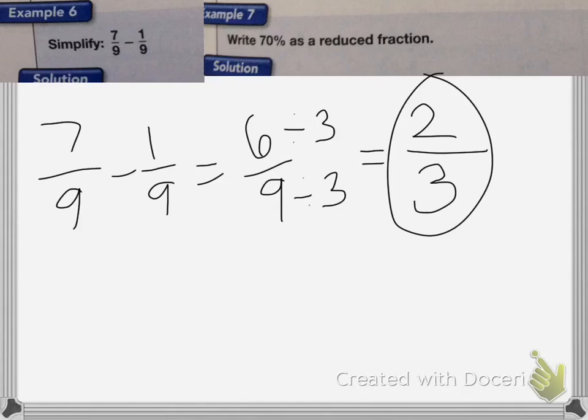With 70% as a reduced fraction, remember that a percent is a fraction with a denominator of 100. So 70% is the same as 70 over 100.